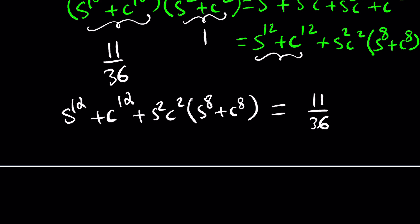Beautiful. But how do you get the sum of the 8th powers? How do you find s squared c squared? That's a million-dollar question and we're going to answer it for free. Since we know that s squared plus c squared equals 1, we can raise it to different powers. Let's try the third power.